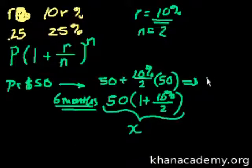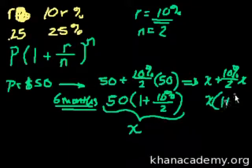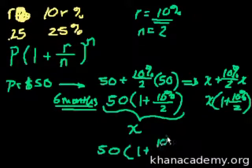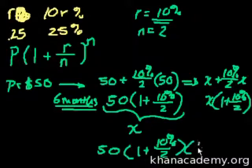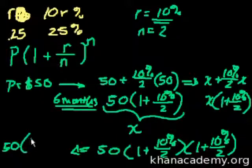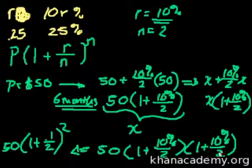So the formula is: 50 times (1 plus the rate) where the rate is 10% divided by the number of compounding periods. This gives us the basic compound interest structure.